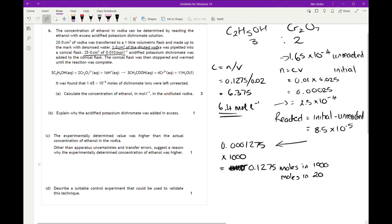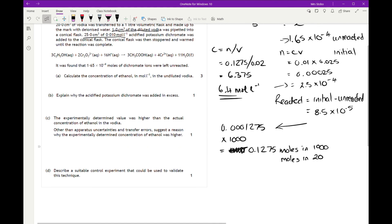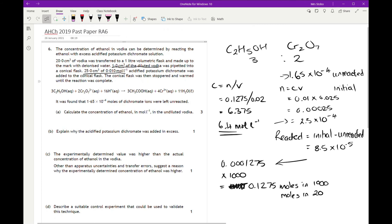Other than apparatus uncertainties and transfer errors, suggest a reason why the experimental determination of the concentration of ethanol was higher. Now this is because we were looking at acidified potassium dichromate.